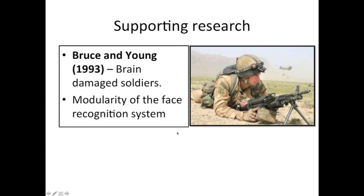Bruce and Young conducted investigations into soldiers who had been brain damaged, and what they found was evidence that face processing was modular. In the same way the memory system involves modules — sensory memory, short-term memory, long-term memory — it appears the face recognition system is also modular. These soldiers had problems specific to one part of the system; one part could be damaged while another stayed intact. For example, they could recognise somebody as familiar but didn't know where from, or they could recognise somebody from their facial expression but not their entire face.